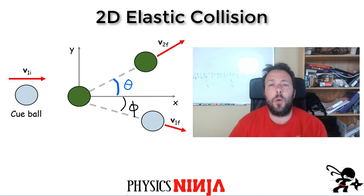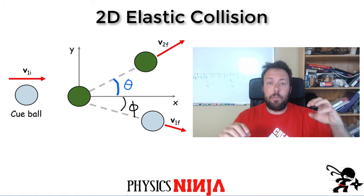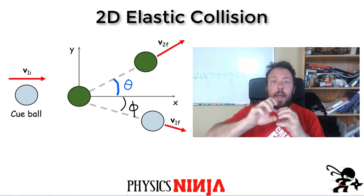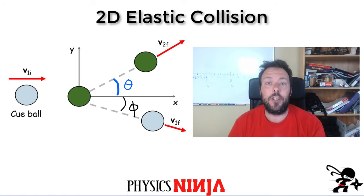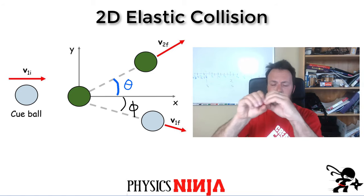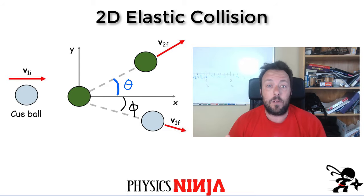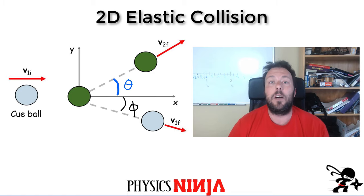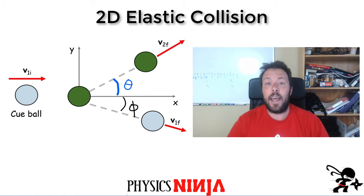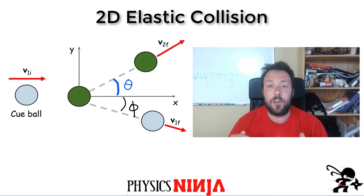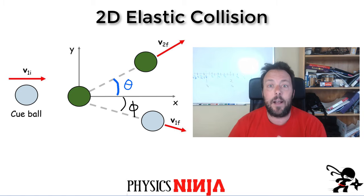Today I want to look at a two-dimensional elastic collision — like a billiard ball, a cue ball that's going to strike another ball that is initially stationary. Only the cue ball is moving, and then they both go off at different angles. I've got the diagram set up. We'll use conservation of momentum, and since it's elastic, also conservation of kinetic energy. At the end, let's get an expression for both angles, theta and phi.